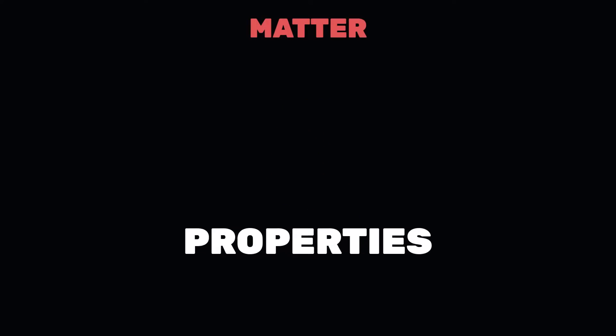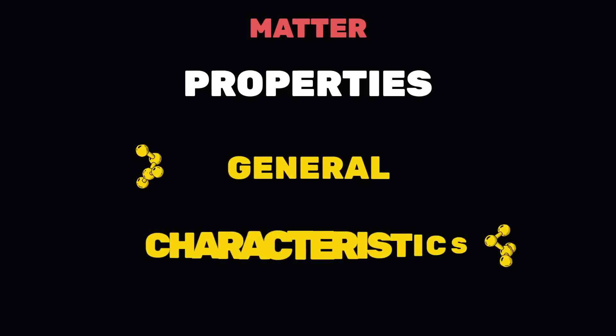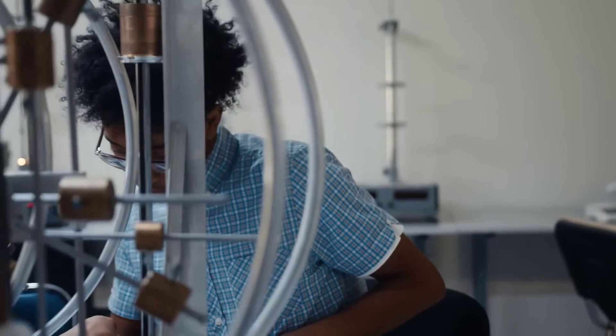Matter has two types of properties, general and characteristics. The general properties help us to know what matter is and what it is not.